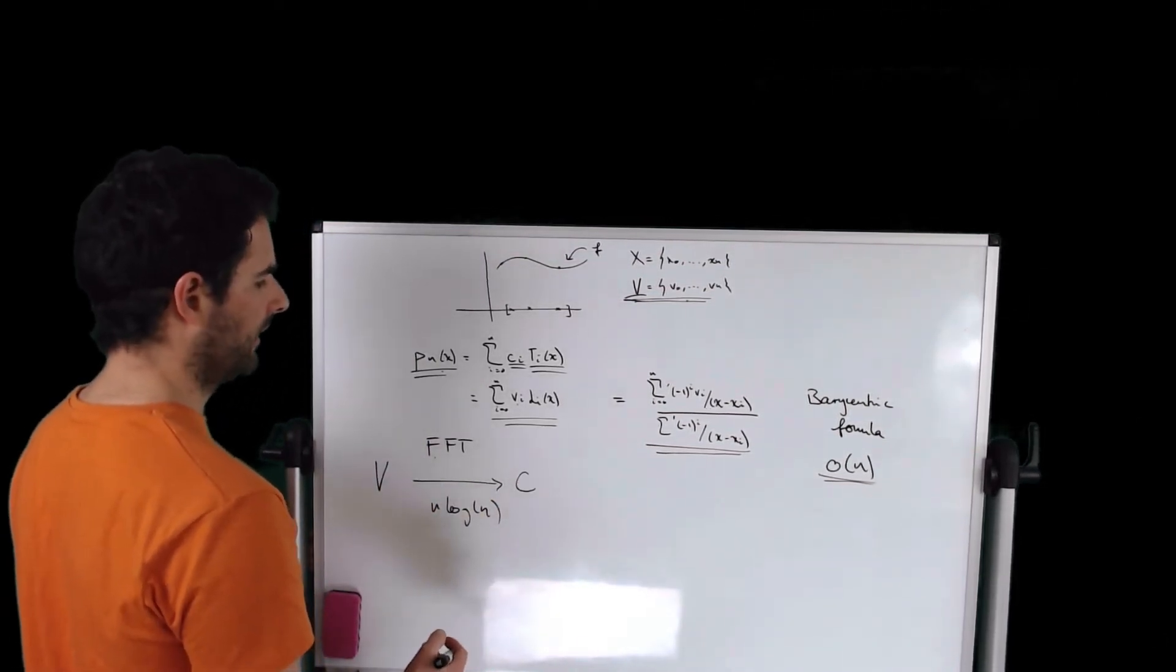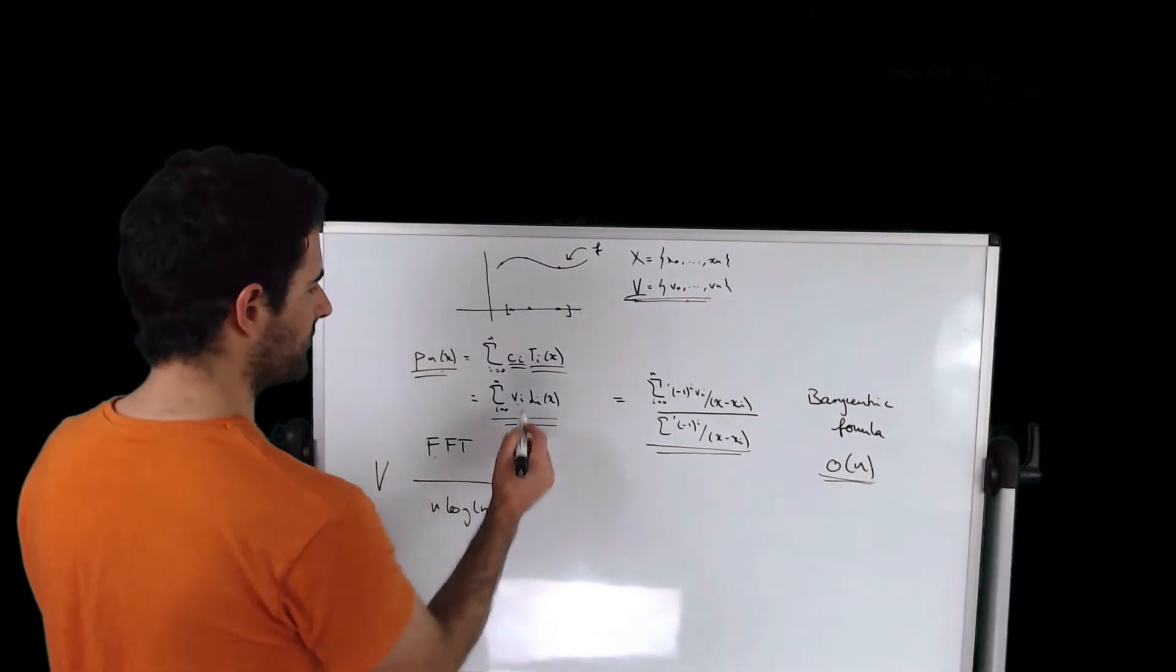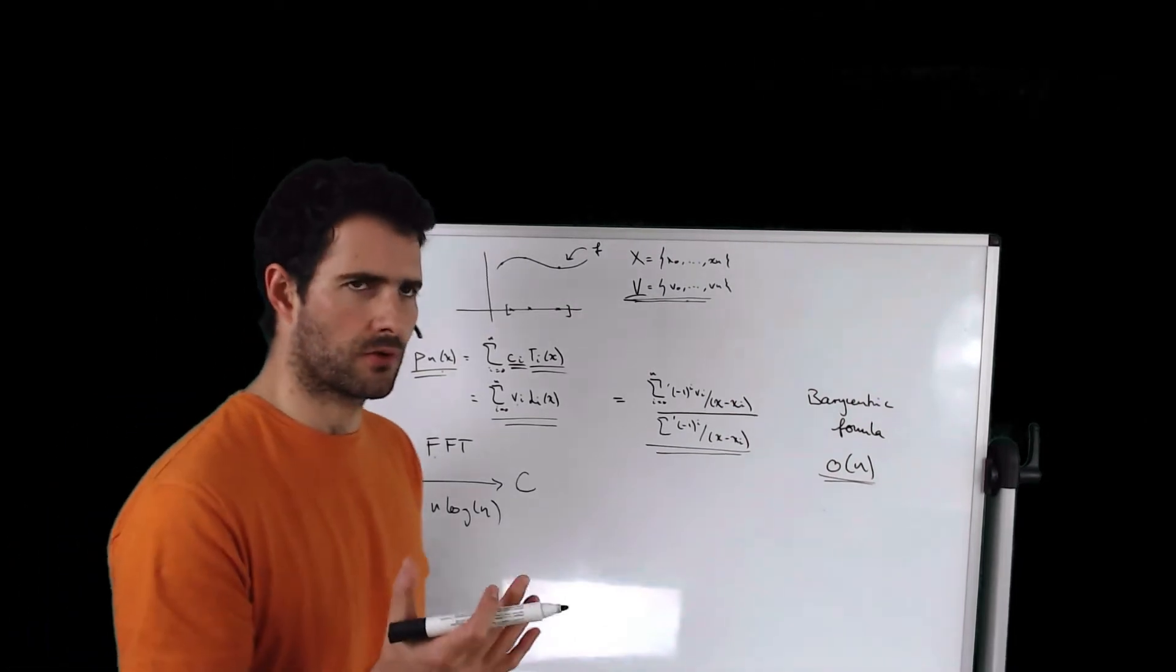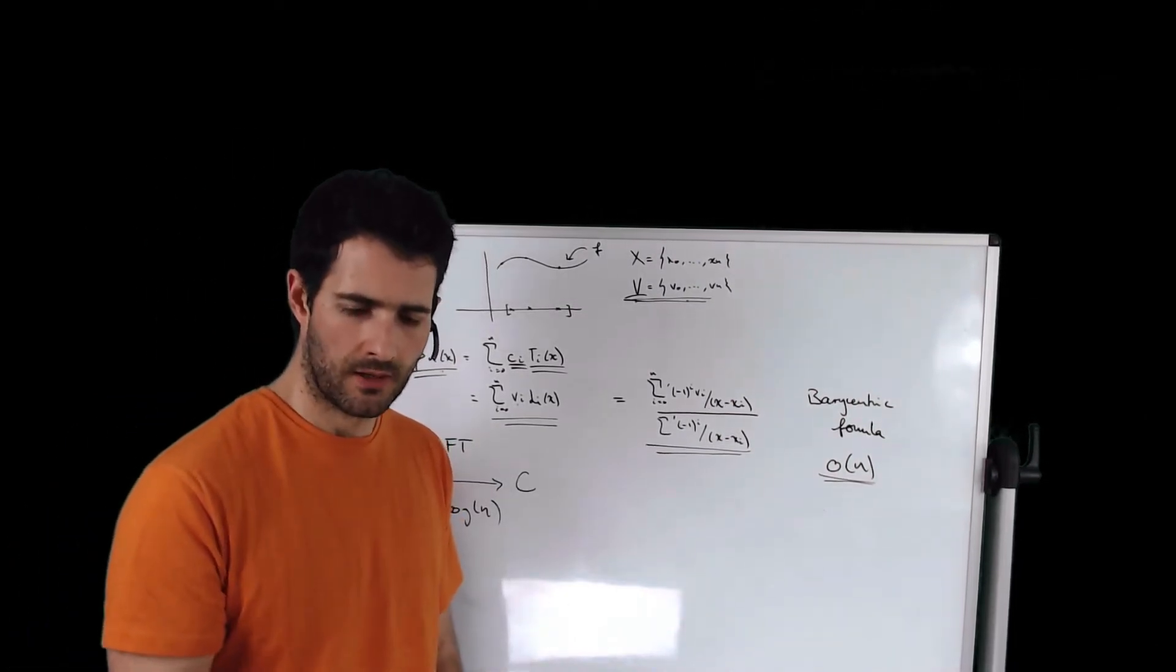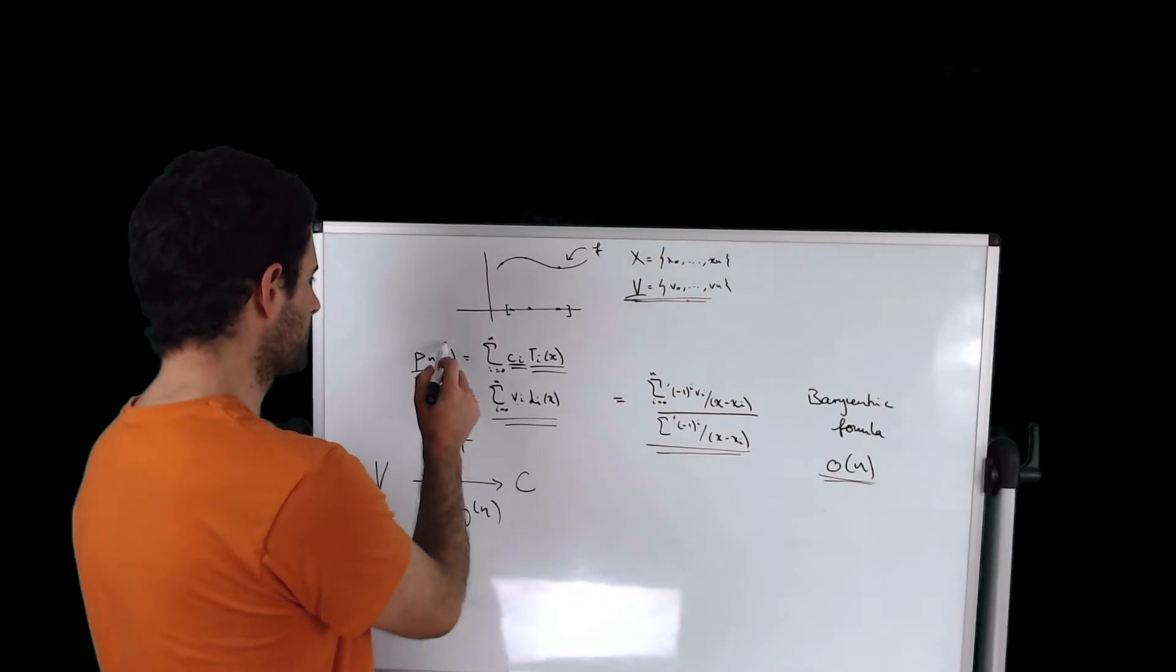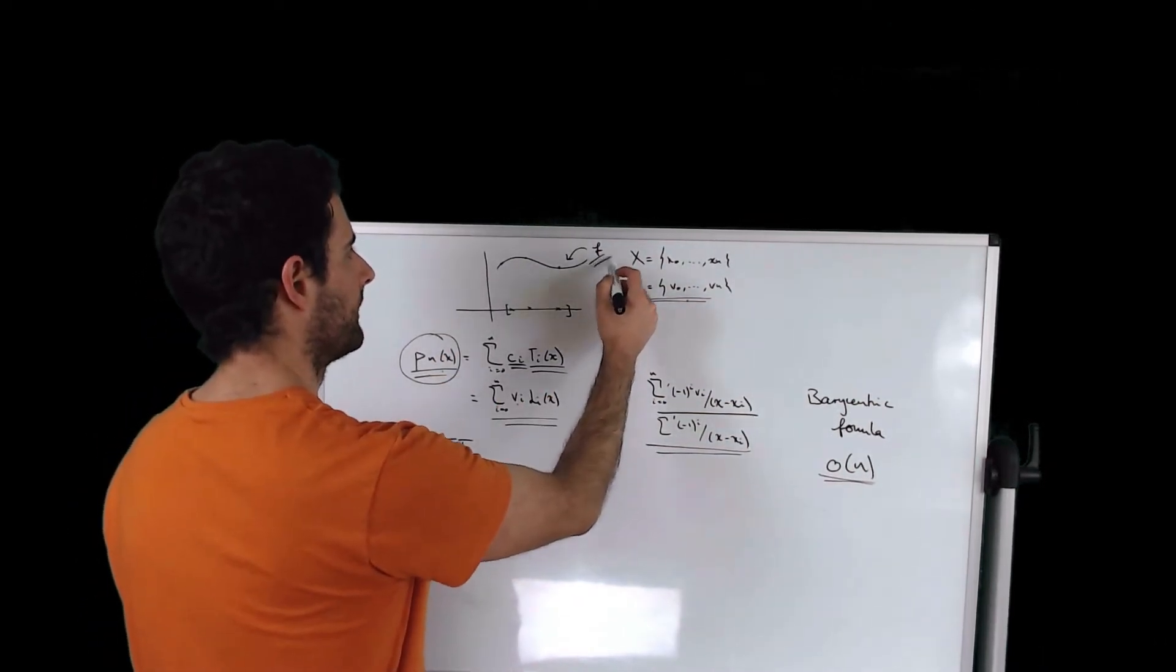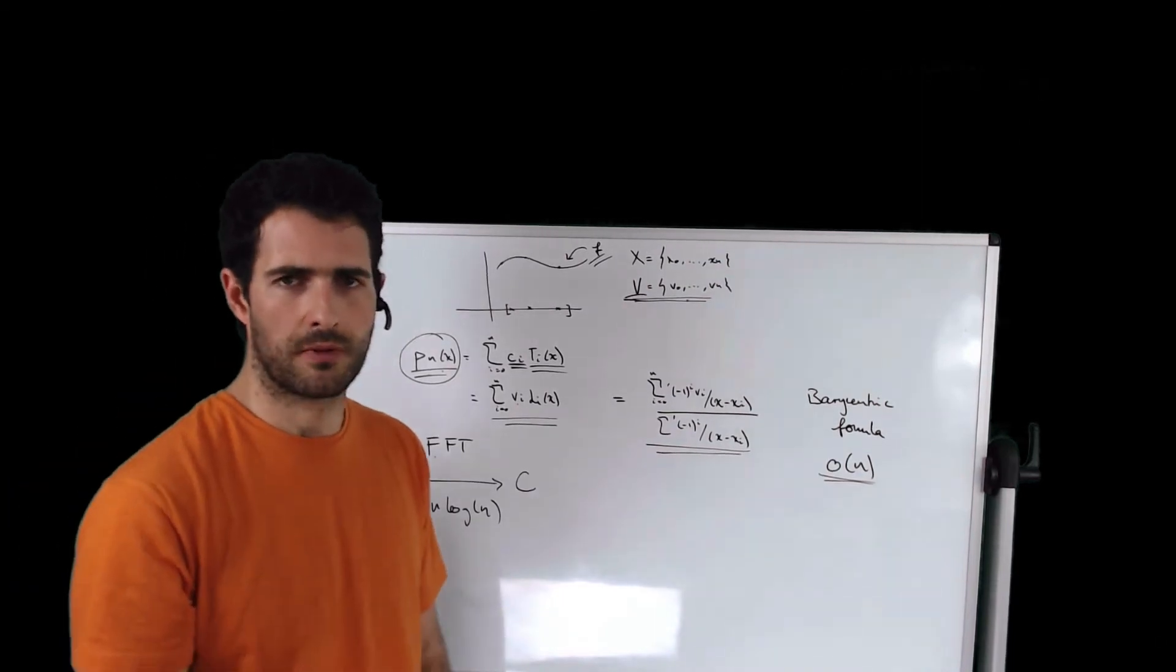The good thing about that is that these coefficients ci allow you to estimate the error of approximation that this Chebyshev object makes as an approximation of the function f, which can be very useful in some cases.